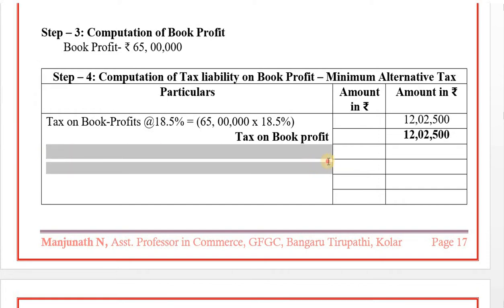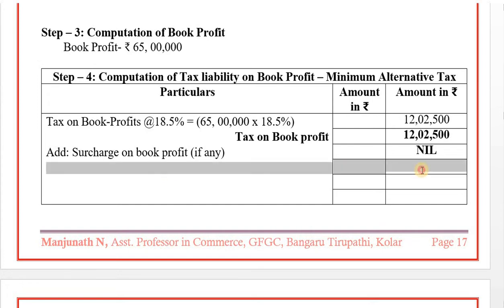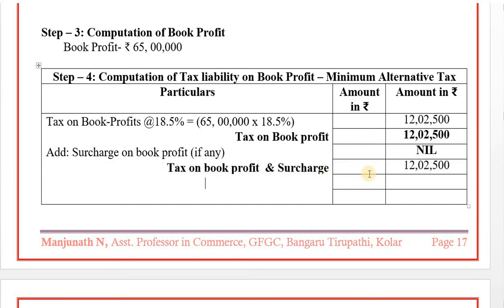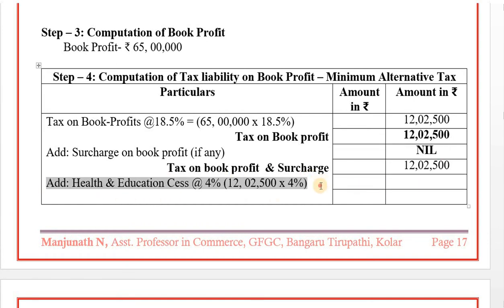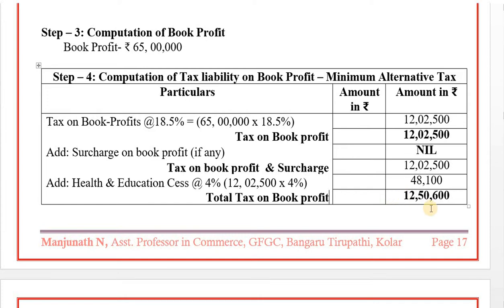Now surcharge needs to be added. Surcharge applies when book profit exceeds 1 crore — book profit of 65 lakh has not crossed 1 crore, so surcharge does not apply. Nil. Health and education cess at 4 percent: 12 lakh 2,500 into 4 percent — it comes to 48,100. Total tax on book profit: 12 lakh 50,600.